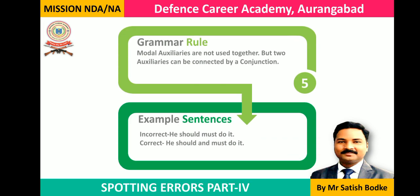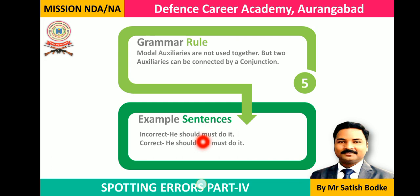Rule number five is about modal auxiliaries. We don't use two modal auxiliaries together, but two auxiliaries can be connected by a conjunction. For example: 'He should must do it' — should and must are both modal auxiliaries and we cannot use them one after the other. We can separate them using a conjunction such as 'and', 'but', or 'as well as': 'He should and must do it.' Just remember that two modal auxiliaries do not come one after the other without a conjunction.